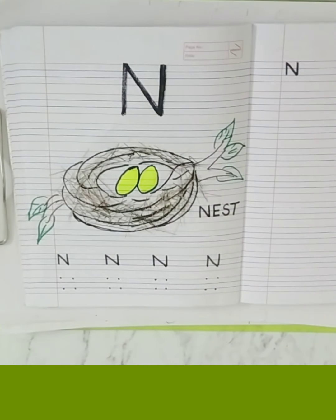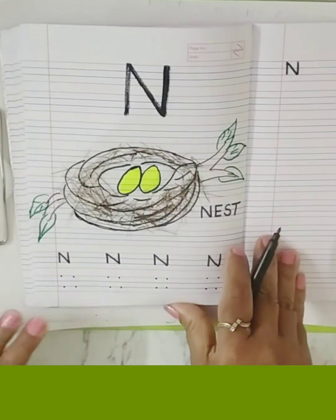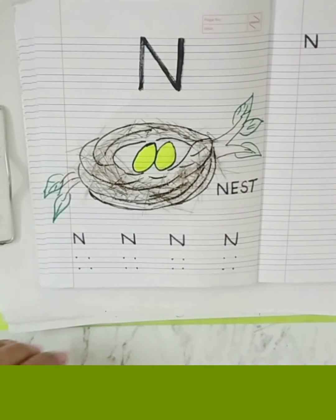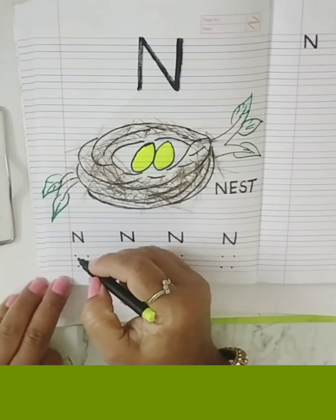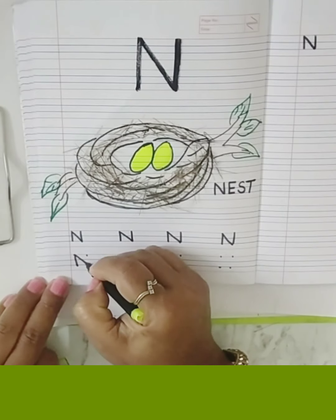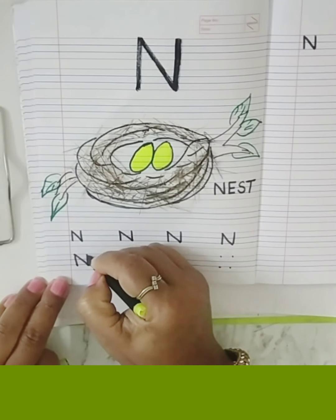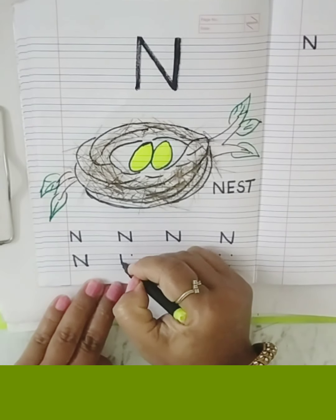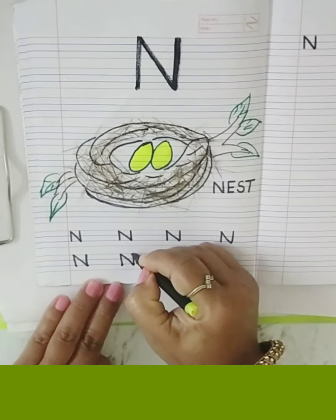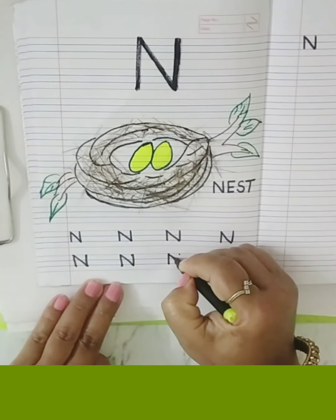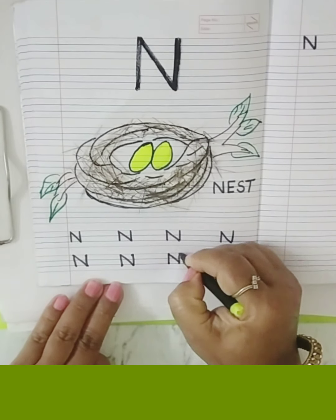And what do we do now? We will write. You will know how to write. So let me tell you: standing line, slanting line, and upward standing line. Standing line, slanting line, upward standing line.